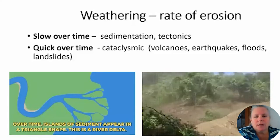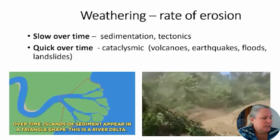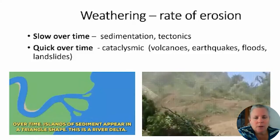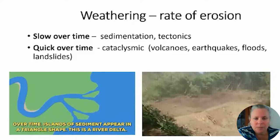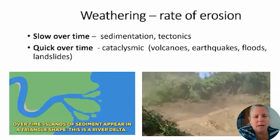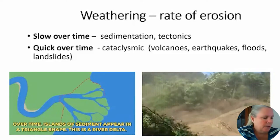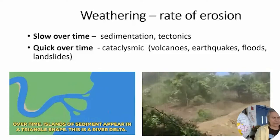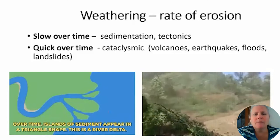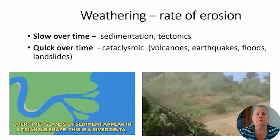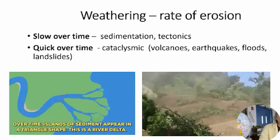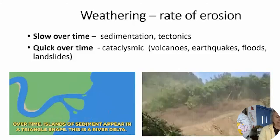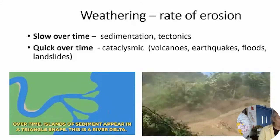My mountains near the Appalachians are very old mountains, so most of those rocks are metamorphic — they've been changed, melted, and reformed so many times. Now, there are different rates of erosion. Some are very quick — if you look at the picture on the right-hand side, what is that? That is a landslide.